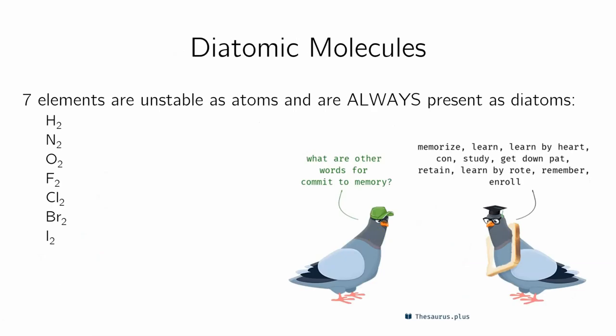Some seven elements are unstable as atoms. You will never see H hang out by itself. You'll see Fe for iron, it will hang out by itself. You'll see copper, U, hang out by itself.